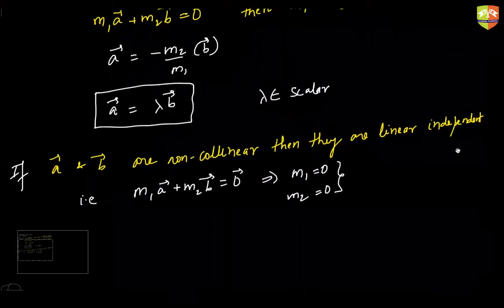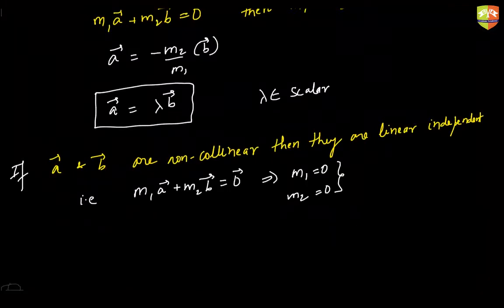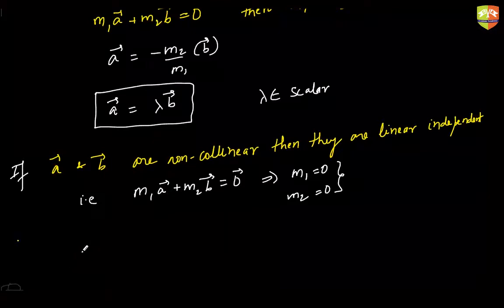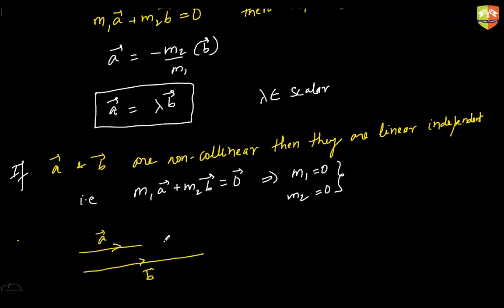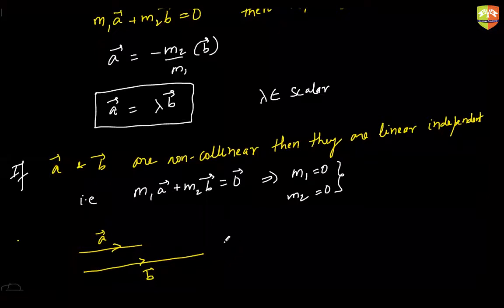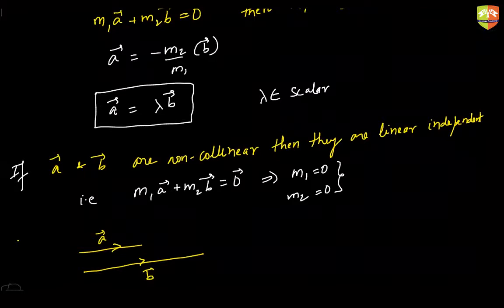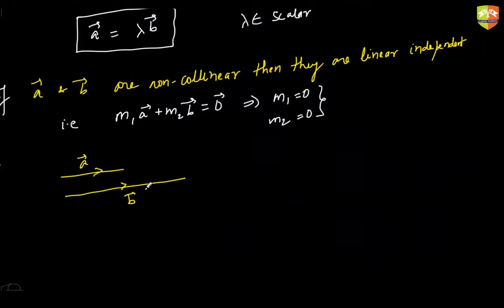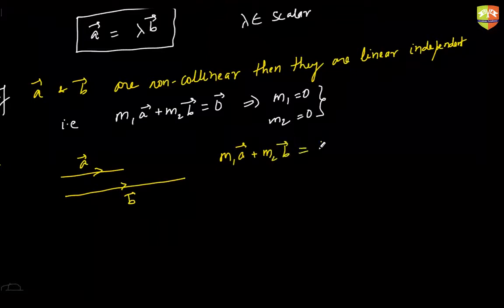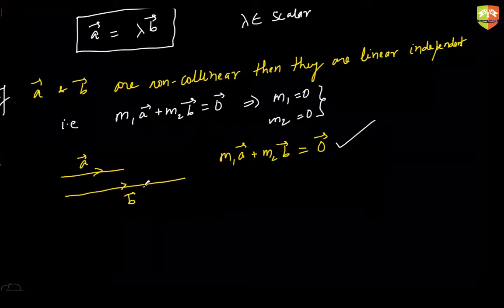Now let us try to understand the deeper meaning of this through vector addition — another perspective. Let's say this is your vector a and this is your vector b, and they are parallel, so they are collinear. If you manipulate these two vectors such that their resultant becomes zero — that means if you do m1·a plus m2·b in such a way that the resultant becomes zero — this is possible without m1 and m2 both being zero.